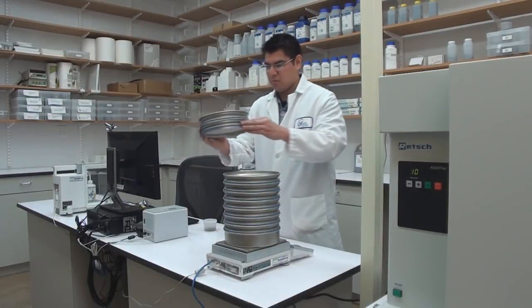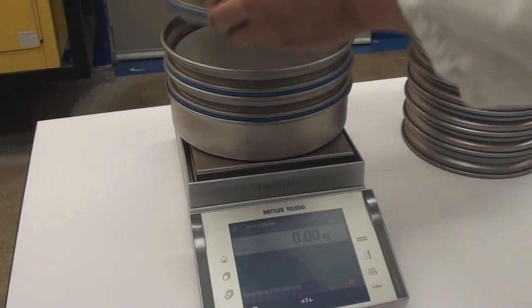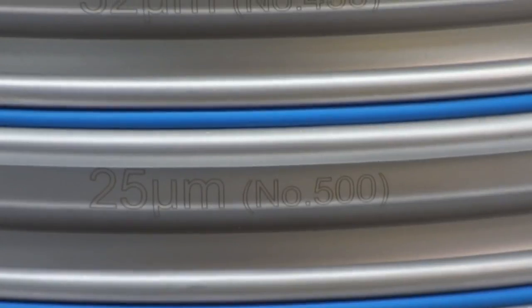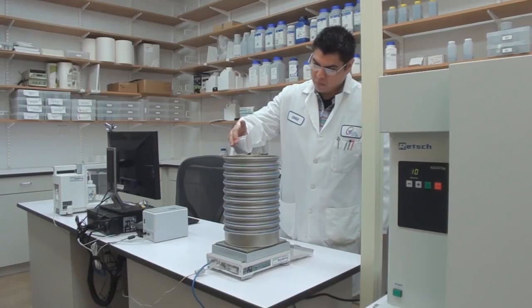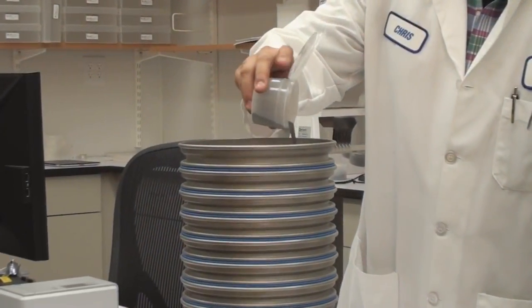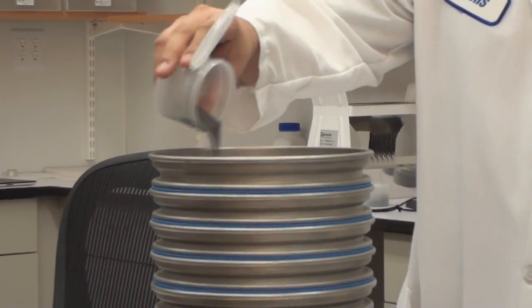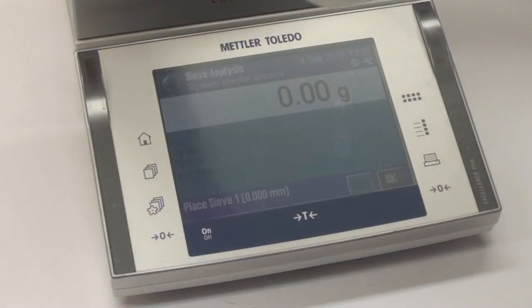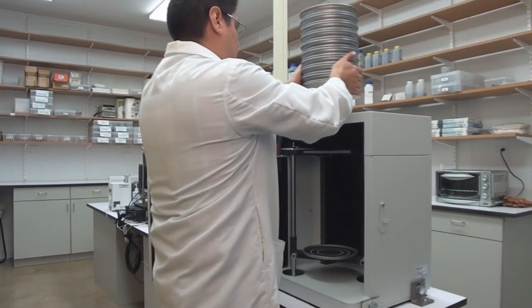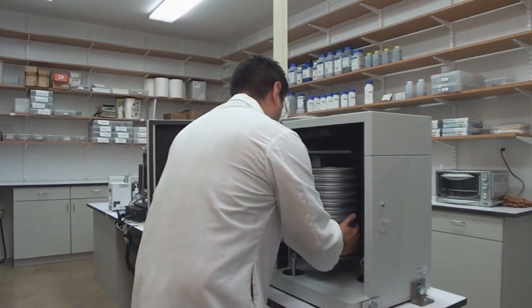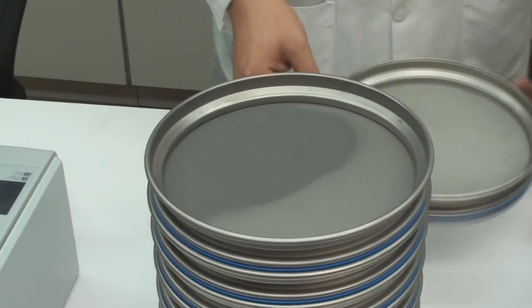We use a process known as powder sieve analysis to determine the particle size distribution of our powders. Particle size distribution of a given powder is important when determining thermal spray capability and fine-tuning spray gun parameters. Once we have established the particle size distribution, our operators can accurately set the optimal distance from spray gun to part. Coarser materials tend to need more time in the plume to heat up versus finer materials which will melt more quickly.